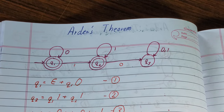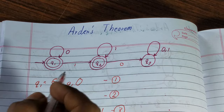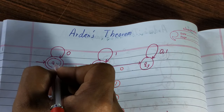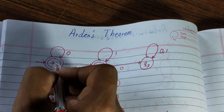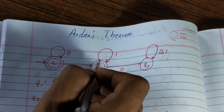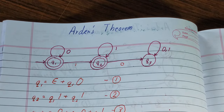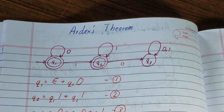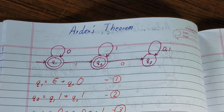Your initial state is q1 and your final states are q1 and q2. These are the basic things you should be aware of when you are using Arden's theorem.